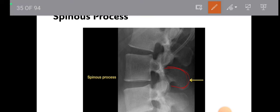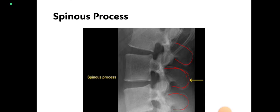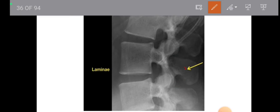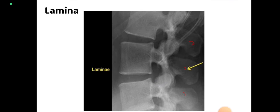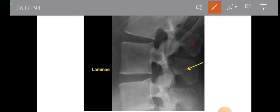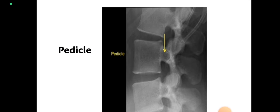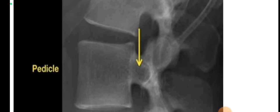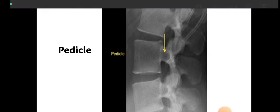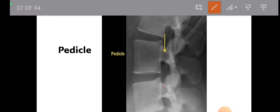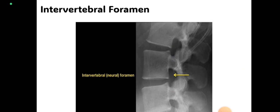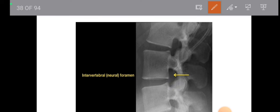Then you have to look for the spinous process — here is the spinous process visible in the lateral view. Then look for the lamina, since two laminae merge to form the spinous process and lamina is present on both sides of the spinous process. Then there is the pedicle, which is present exactly behind the vertebral body. You can see the intervertebral foramen — a gap or space around the pedicle between vertebral bodies — through which nerves exit from the spinal cord to supply the lower limb.